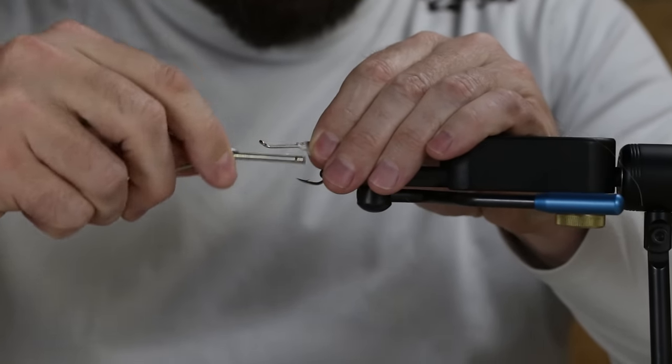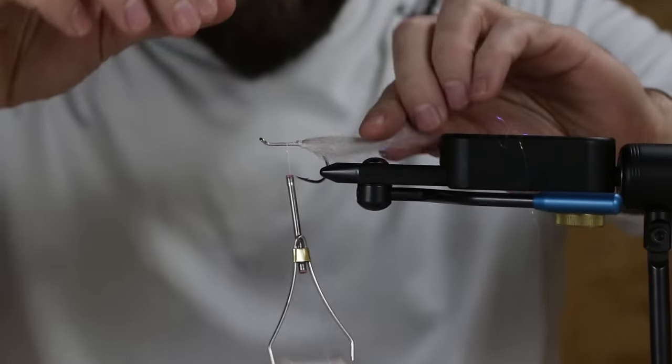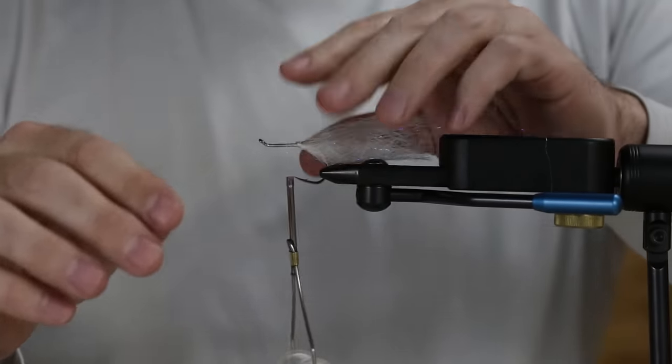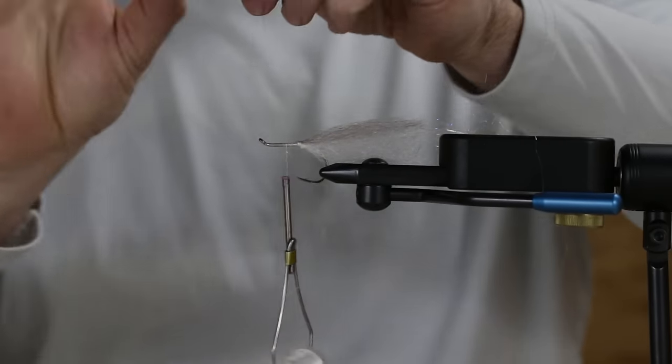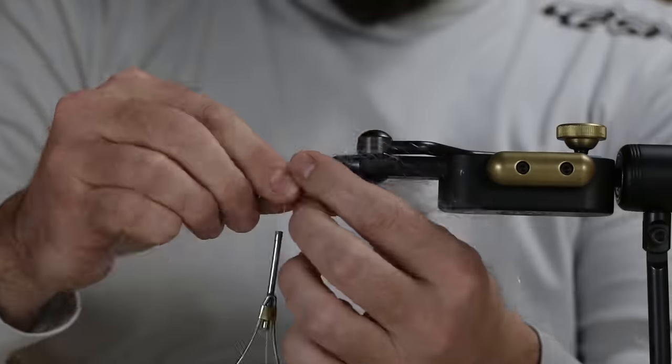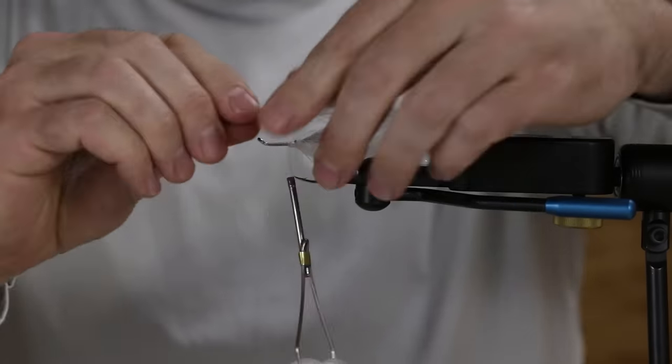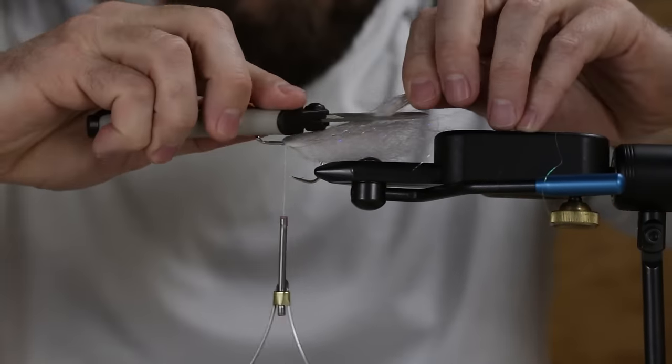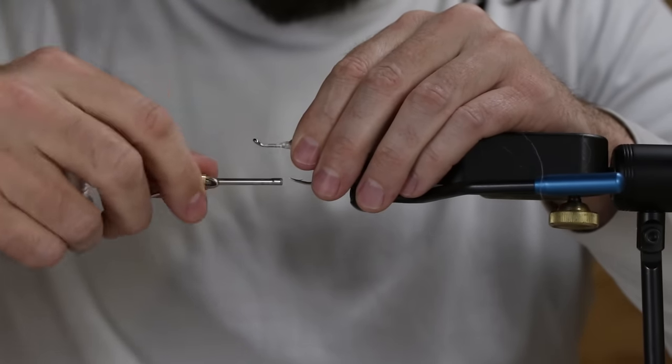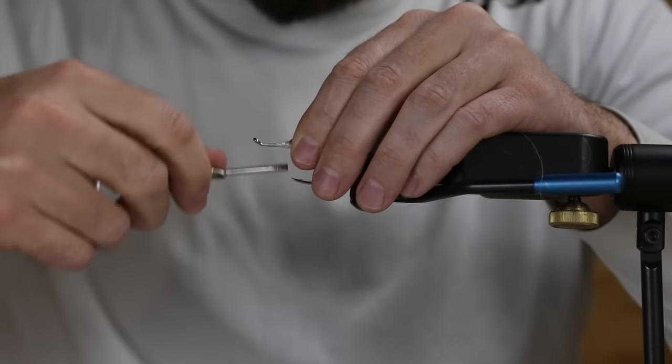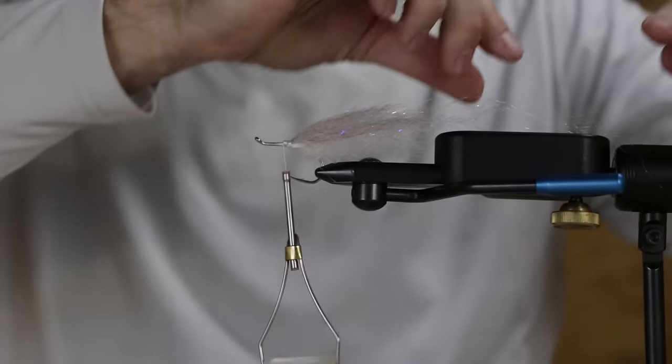Okay, again fold that over, trim that on an angle, lock that down. Depending on how big or how bulky of a pattern or a baitfish that you want, you can do this several times, but basically we're going to repeat the process again for the belly. Kind of build this head up just a hair. We're starting to take shape nicely.